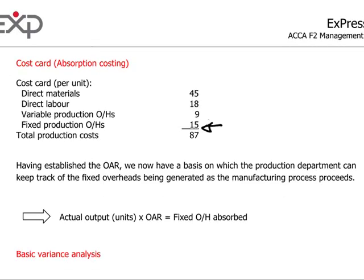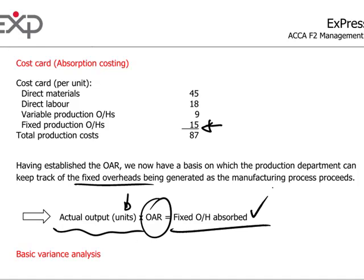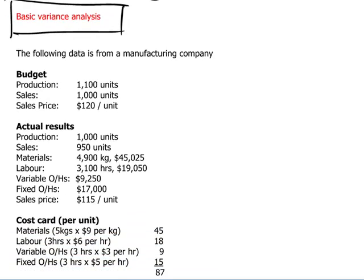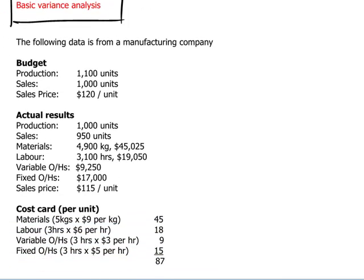The $15 per unit appears in our per-unit cost card for the full absorption costing method. Now that we've established the overhead absorption rate, we can track fixed overheads being incurred as we manufacture: actual output times the overhead absorption rate gives us our fixed overhead absorbed. Let's move to basic variance analysis and use a numerical example to show how it's done.